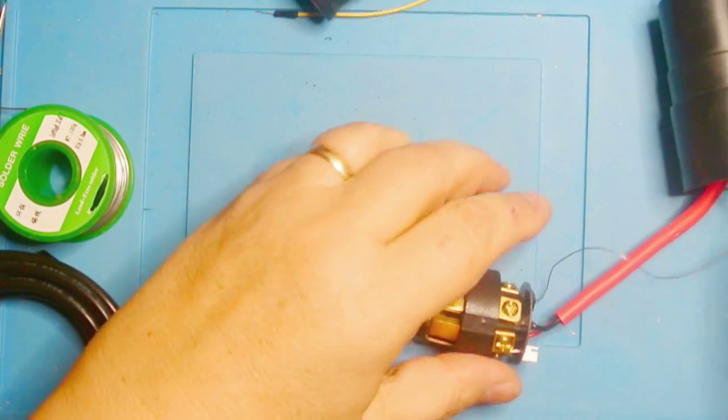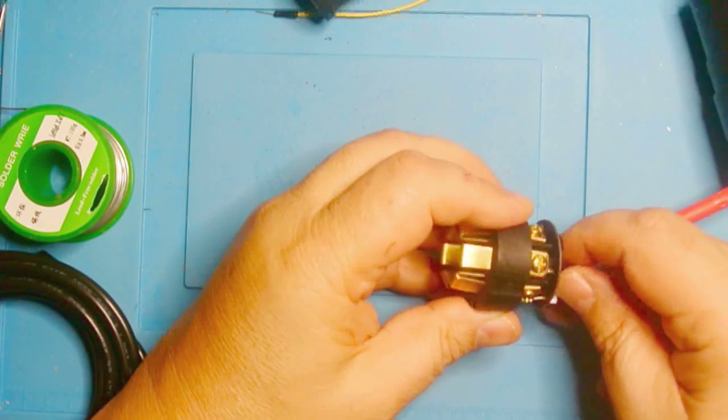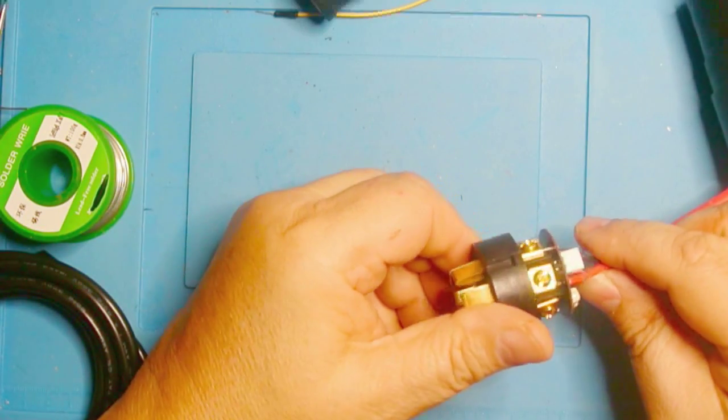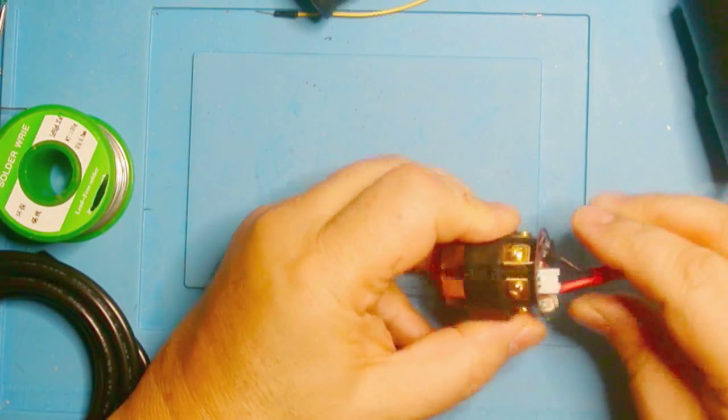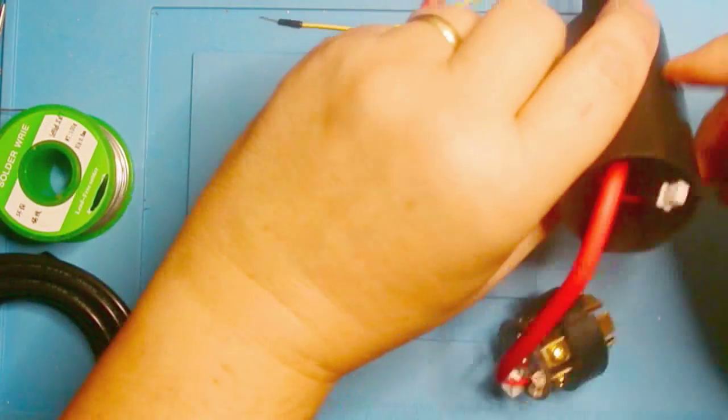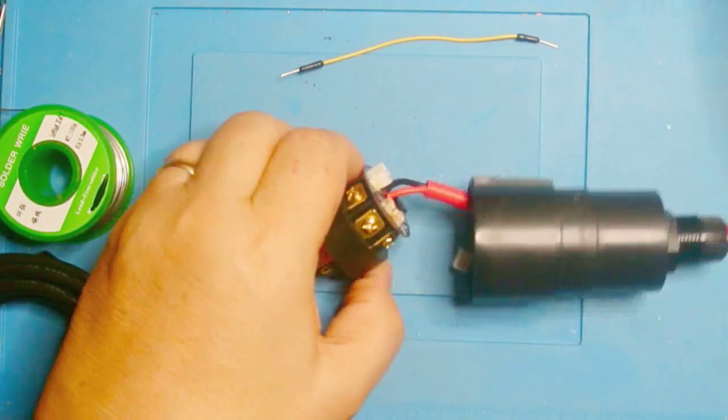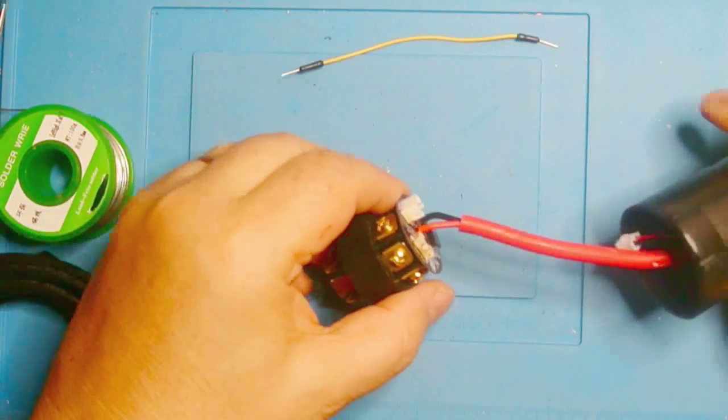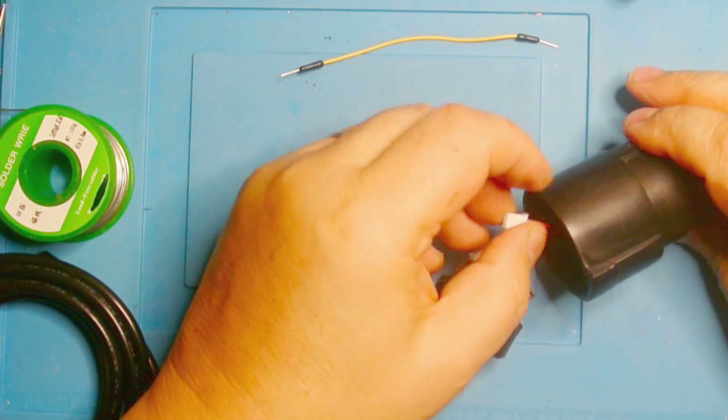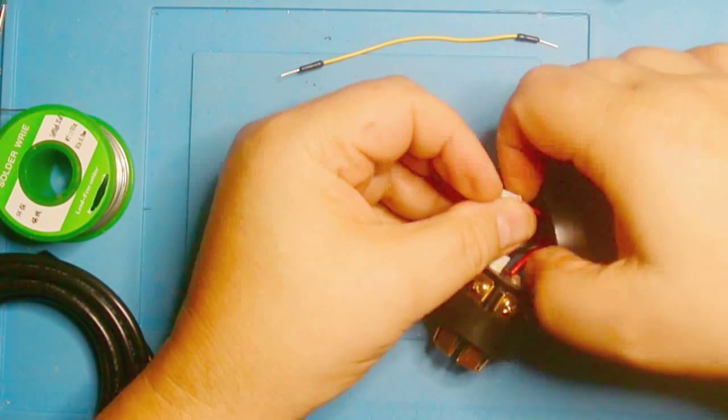The last thing we want to do before we button this up is we want to make sure, look through here, that we're not touching anything. So now we're just going to button her up and we just feed this back through here until we can get to the LED.